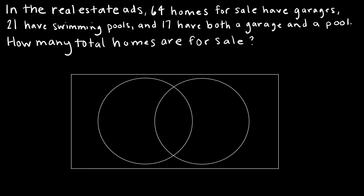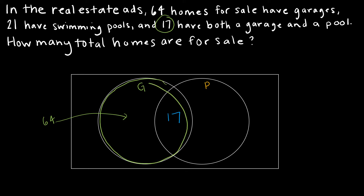There are a lot of ways to go about this, but we're going to do it the long way without our equation yet. In a Venn diagram, if the first circle represents garages and the second circle represents pools, I cannot take 64 and put it directly into this circle because I know that 17 have both. So I'm going to put 17 in the middle, because 17 represents the intersection where there's both a garage and a pool. That means everything inside the garage circle needs to total 64, including the 17, so I have to take 64 minus 17 to get 47.